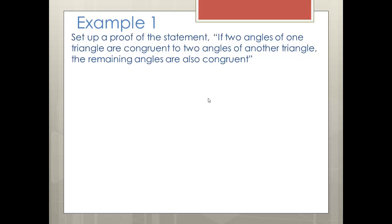All right, so let's set up a proof of the statement. If two angles of one triangle are congruent to two angles of another triangle, the remaining angles are also congruent. So the key here is a lot of times you're going to be given it as an if-then statement. Sometimes you won't be given the then. Sometimes you won't be given either. But a lot of times you at least have the if. So the if is what you're given. This last part would be what you're trying to prove.